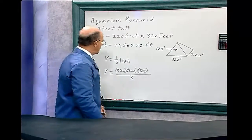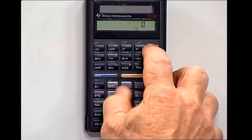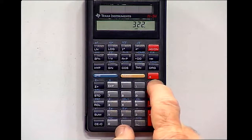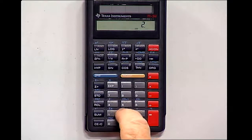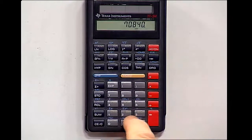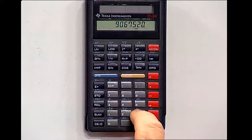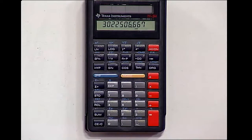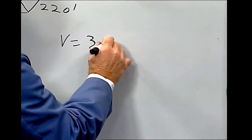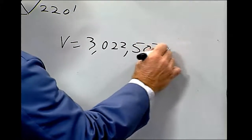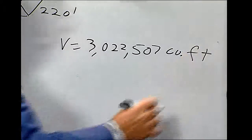Let's go to the calculator and plug in the numbers: 322 times 220 times 128, divided by 3 equals approximately 3,022,507 cubic feet.